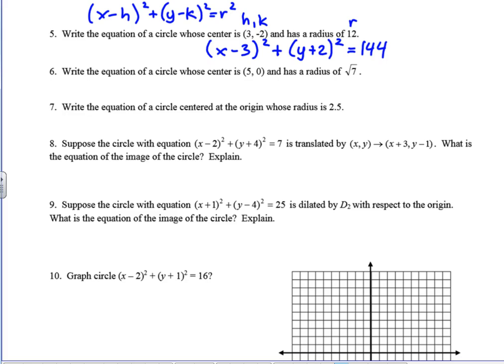So go ahead and do 6 and 7 and see if you can write the equations for 6 and 7. Okay, so for 6, we got a positive 5 and a 0. So this is going to be x minus 5 quantity squared. Now if you want to write the 0, it's not incorrect, but it's not necessary, y squared. And then some people have been asking, what happens when you take the square root of 7 and you square it? Well, that's just 7. The square root of 7 times the square root of 7 is the square root of 49. The square root of 49 is 7. Other way you can think about it is the square root and the square root cancel each other out. So the origin one, this would be x squared plus y squared. 2.5 squared is 6.25. So again, we could leave it in that way.